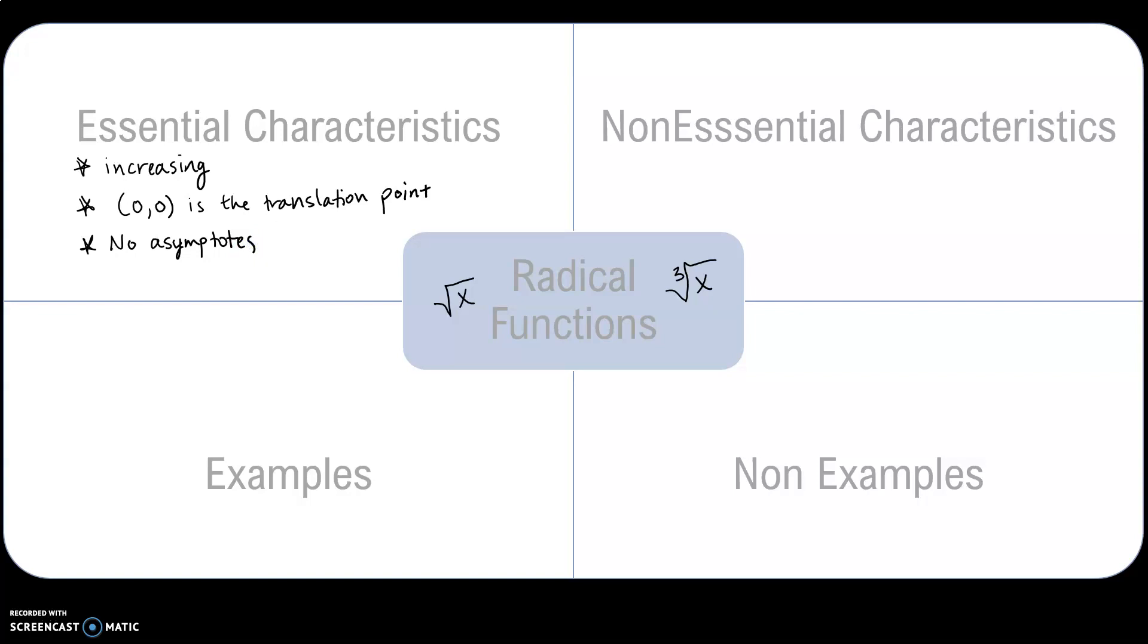The non-essential characteristics, we're going to just separate these out as characteristics of the square root function versus characteristics of the cube root function. The square root function has a limited domain. The cube root function has a domain of all real numbers.